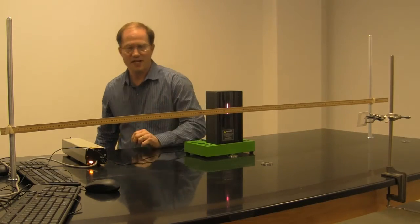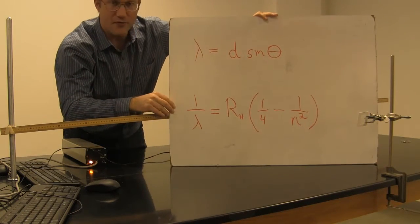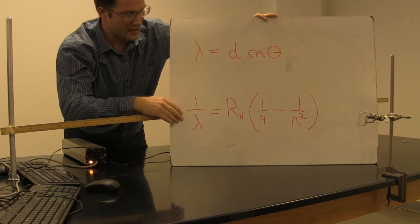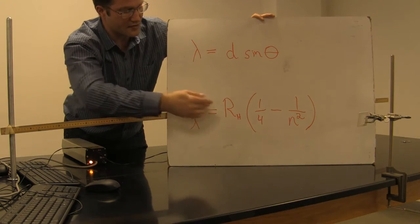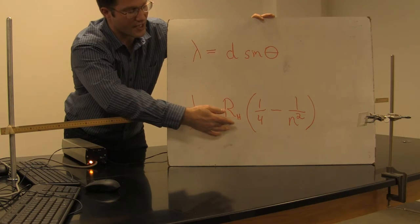Now, those four wavelengths of light are predicted by the Balmer formula. The Balmer formula says that one over the wavelength of light emitted in hydrogen is equal to R sub h, which is the Rydberg constant for hydrogen,